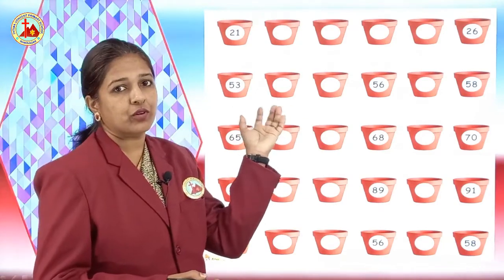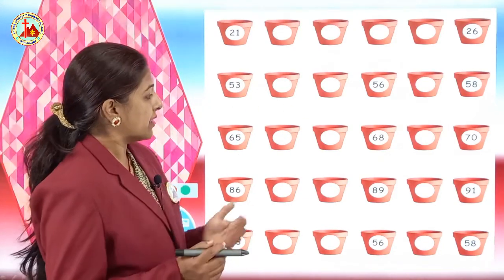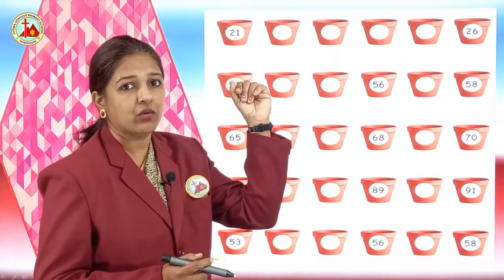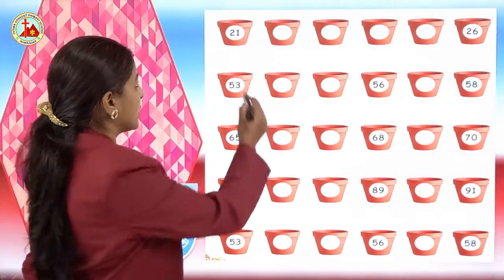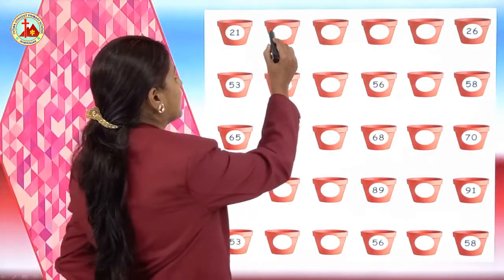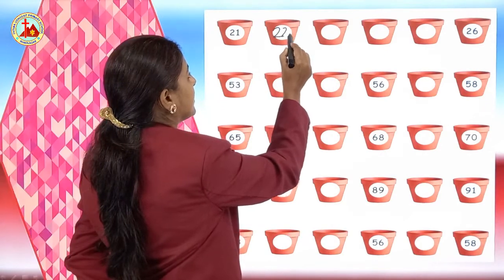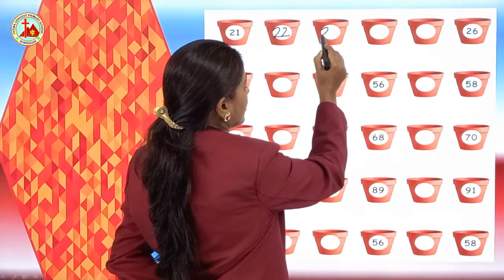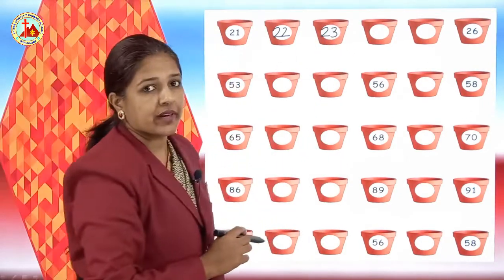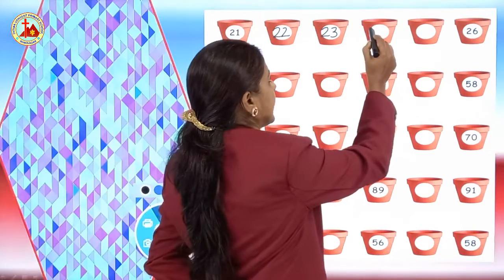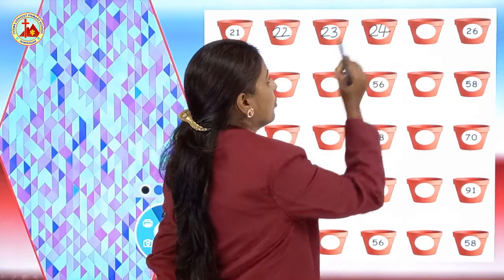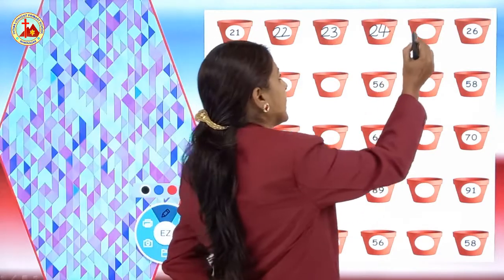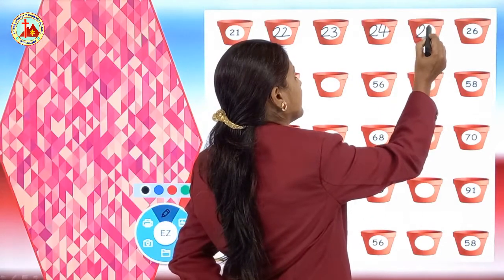First let's revise the numbers before 71. Here you can see number 21 is written and some numbers are missing. So here the first number is 21. After 21 comes 22, then 23, you have to write. Then next 24. Next 25, and 26 is written over here.